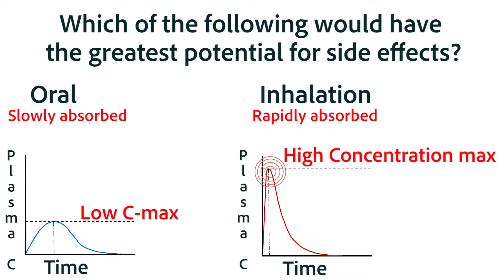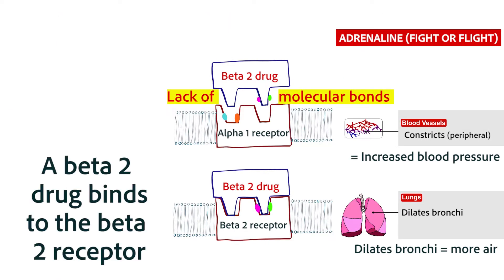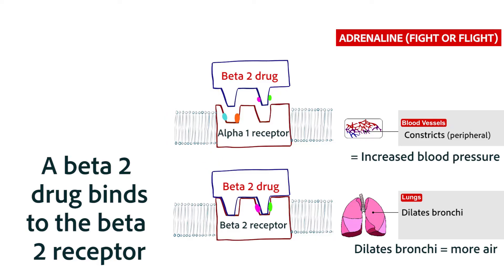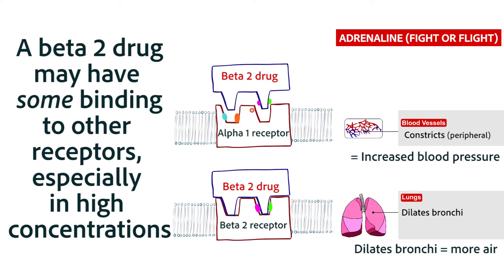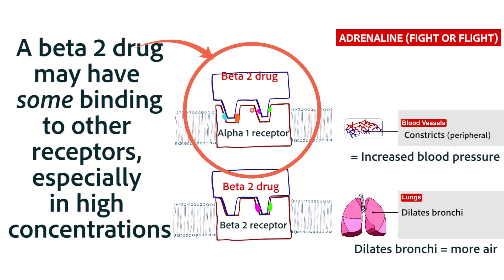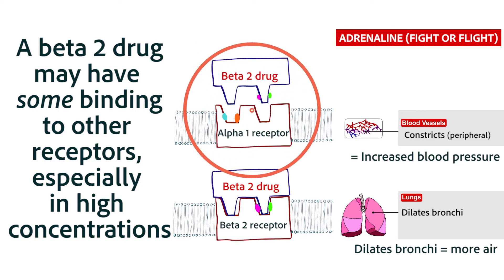So there's a greater potential for overdose with medications that are intravenously injected or administered by inhalation. Most medications bind to the receptor or enzyme that they're supposed to bind to, but they also have some effect on other receptors or enzymes — and that's the reason for many of the side effects of the medication.